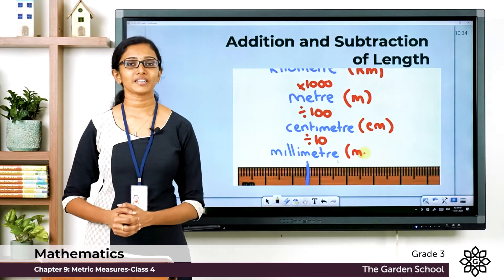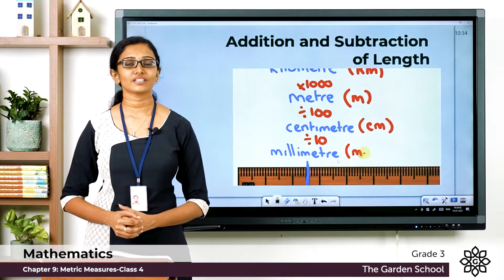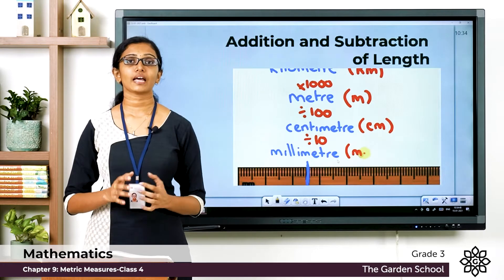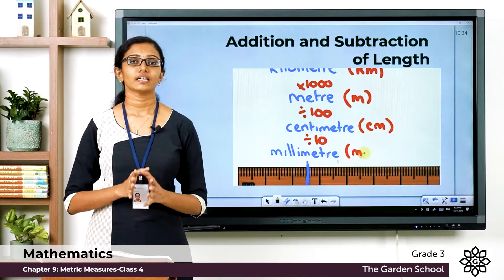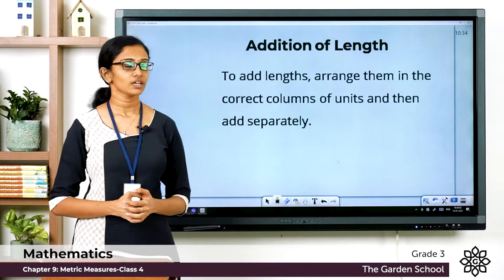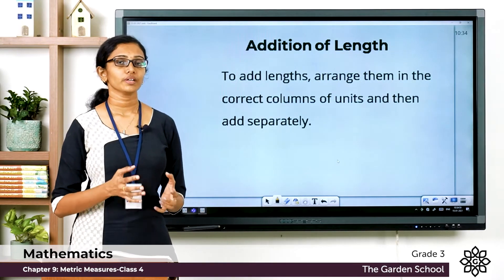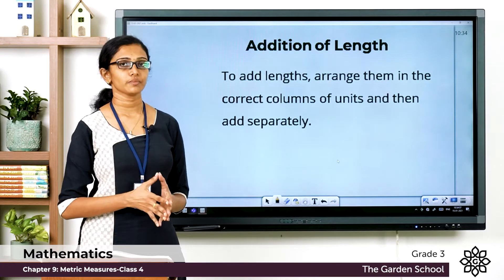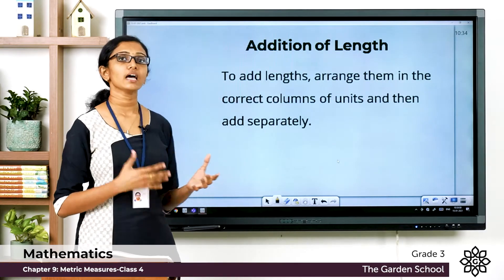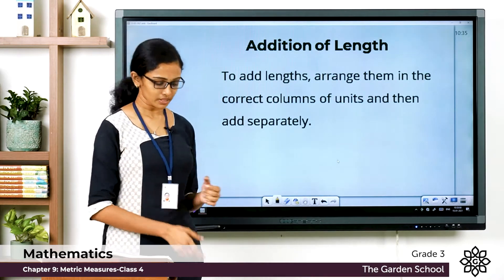Good morning everyone, welcome back to Grade 3 Mathematics class. Today let's learn how we can add or subtract lengths. The first thing we'll see is addition of lengths. To add lengths, you have to arrange the given measurements in appropriate columns of units and then add separately. Let's make it more clear with examples.